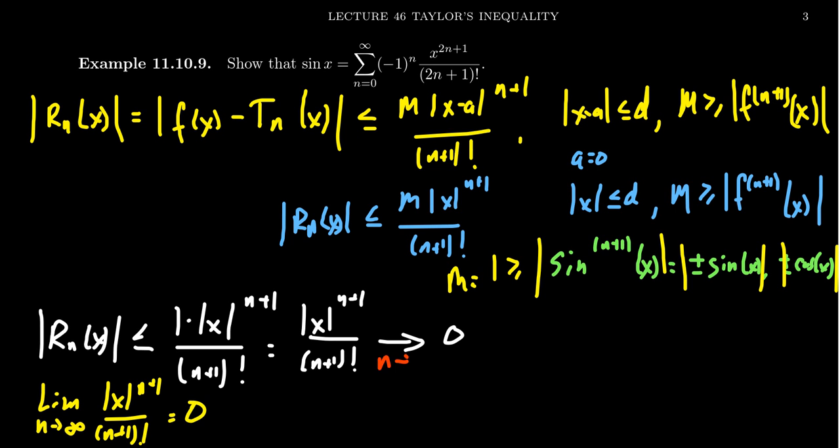So as n gets bigger and bigger, this tells us that r_n of x will approach 0 as n goes to infinity. So what this tells us is that for a fixed d, this will go to 0. This tells us that on the interval negative d to d, we get equality: sine of x equals its Maclaurin series so long as x is between negative d and d.